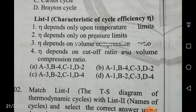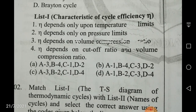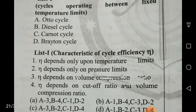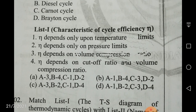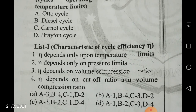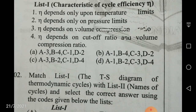Now you have to match: is it A3, B4, C1, D2; or A1, B4, C3, D2; or A3, B2, C1, D4; or A1, B2, C3, D4? Think it over — which cycle depends upon temperature limits, pressure limits, or volume compression ratio, or cutoff ratio. Definitely cutoff ratio and volume compression ratio are both important in the Diesel cycle; volume compression ratio in the Otto cycle; temperature limits in the Carnot cycle; and pressure limits in the Brayton cycle. You can accordingly choose the answer.